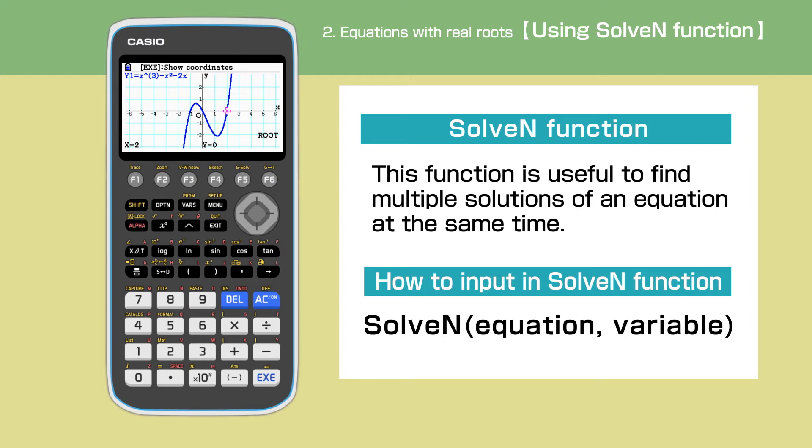The solver function we are able to find under equation in the main menu is useful if an equation includes multiple variables and we substitute values in such variables to find an unknown. The other solver function is called SolveN. SolveN is suitable when we want to find multiple solutions of an equation at the same time. Our equation is x cubed minus x squared minus 2x, and because we want to find the roots, we should use SolveN here.